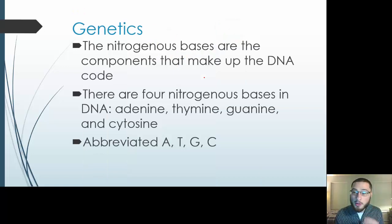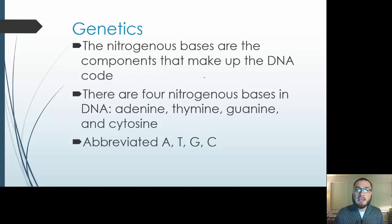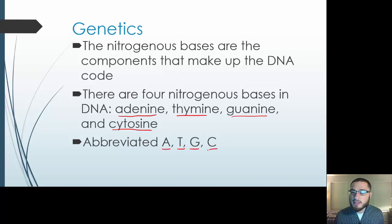The nitrogenous bases are the components that make up the DNA code. When we talk about DNA having a deoxyribose sugar, a phosphate group, and a nitrogenous base, these are the chemical components that make it DNA. But what's going to create that code — what makes different segments different — is the nitrogenous bases: adenine, thymine, guanine, and cytosine. Typically we abbreviate them as A, T, G, and C. You just need to understand that these four different nitrogenous bases make up the code.